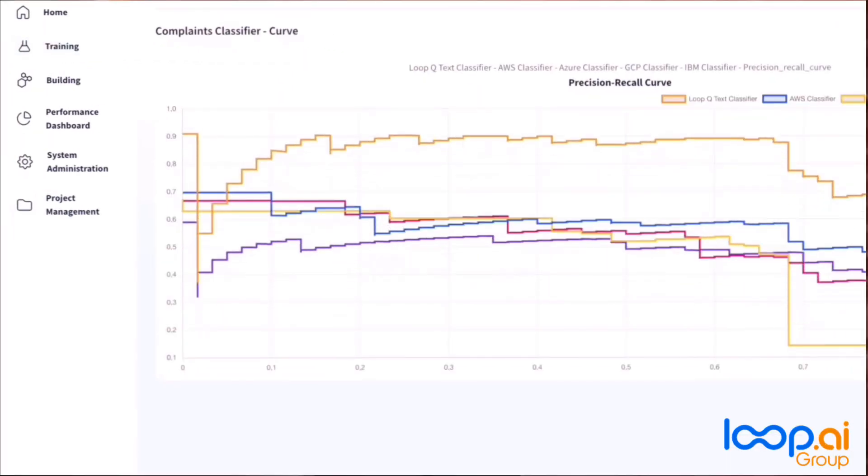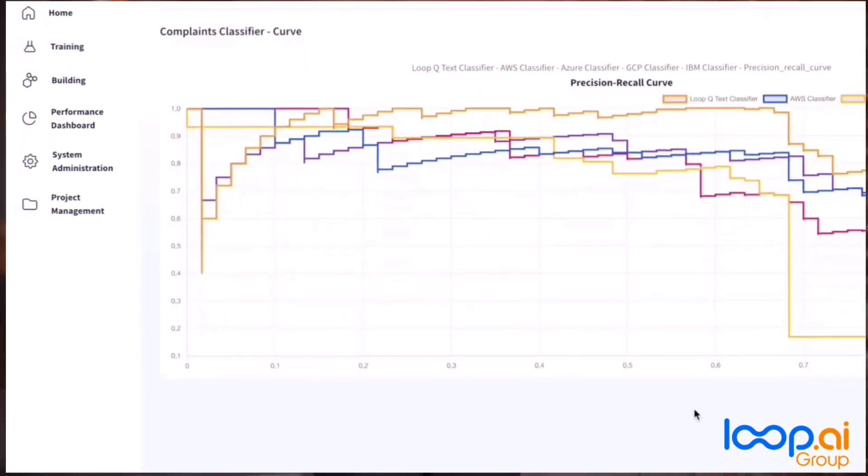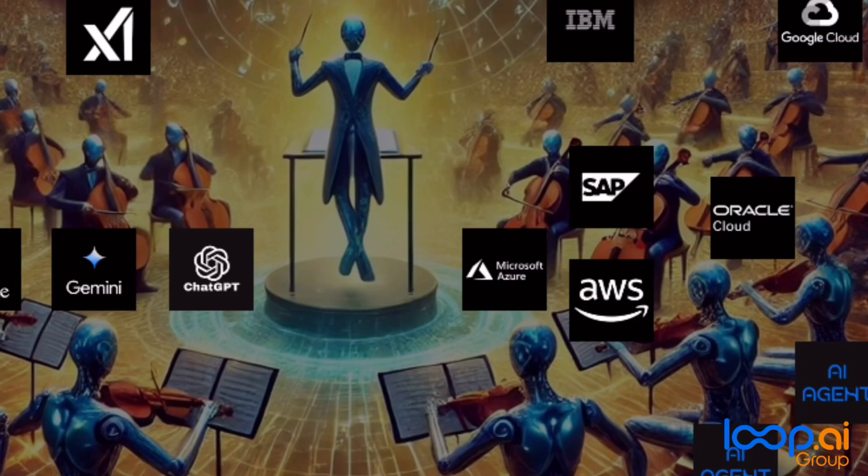As the only solution on the market that enables continuous automated comparison of algorithms' performance for each component of an AI agent, Loop Agents Orchestra seamlessly integrates APIs from major providers, in-house developments, and open-source options. This empowers organizations to dynamically adapt and manage a multi-vendor strategy, ensuring optimal performance and cost efficiency throughout the lifecycle of their AI agents.